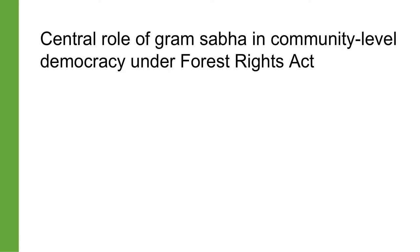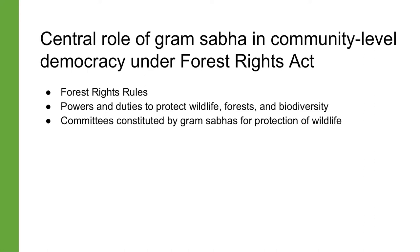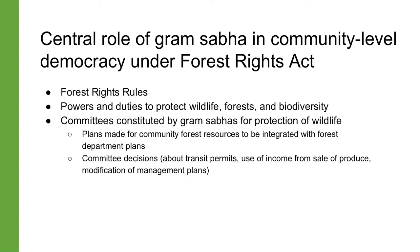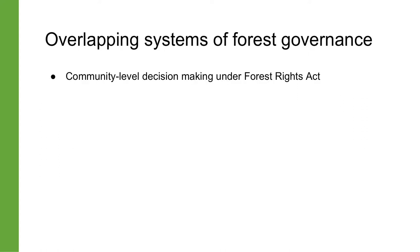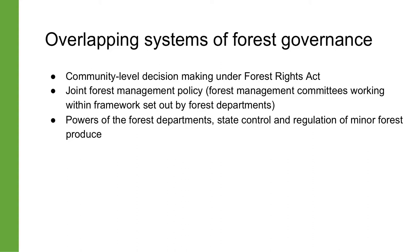Apart from the recognition and vesting of these rights, the Forest Rights Act also set up democratic procedures for decision-making at the level of settlements, with the Gram Sabha playing a central role. Under the rules made under the Forest Rights Act in 2007, people and communities with forest rights and the Gram Sabha have the powers and duties to protect wildlife, forests and biodiversity. Gram Sabhas can constitute committees for the protection of wildlife. Conservation and management plans made for community forest resources have to be integrated with those of Forest Departments. Decisions made by these committees regarding transit permits, use of income from sale of produce, and modification of management plans have to be approved by the Gram Sabhas. However, the operation of these rights and powers of governance has not been quite harmonious, having come into conflict with the parallel system of joint forest management and the powers of Forest Departments under other laws.